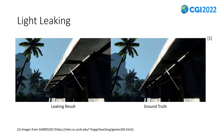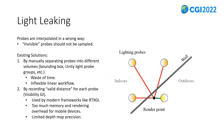It looks like lighting is leaking from the upside to the downside of the roof — that's how the name light leaking comes from. Light leaking happens because probes are interpolated in a wrong way: invisible probes should not be sampled. It is obvious that such scene structure should be considered by the renderer when reconstructing the light field from the probes.